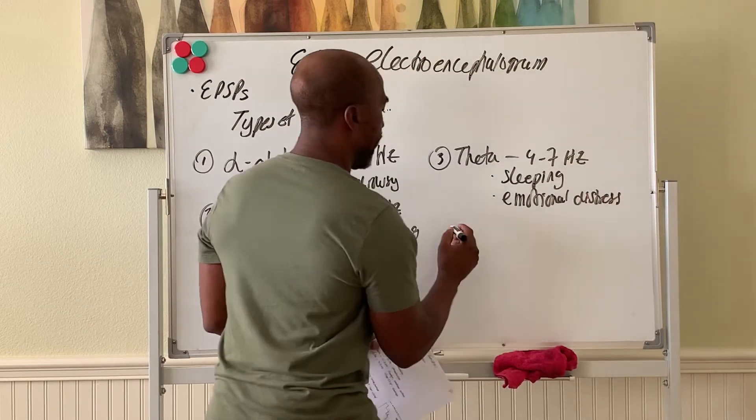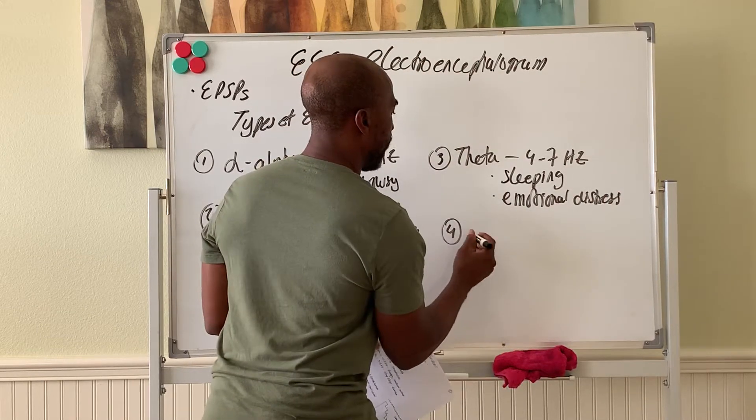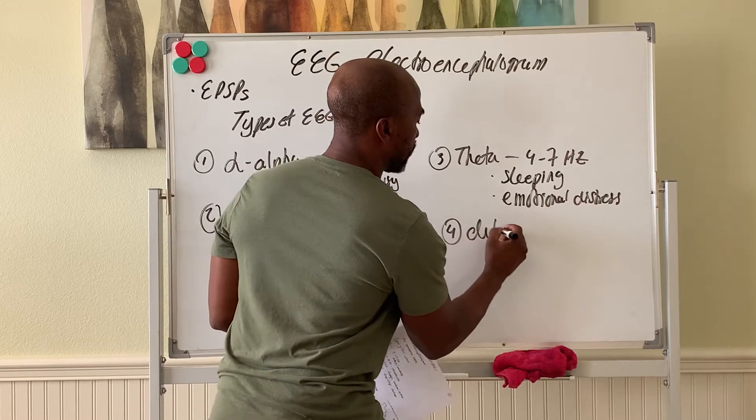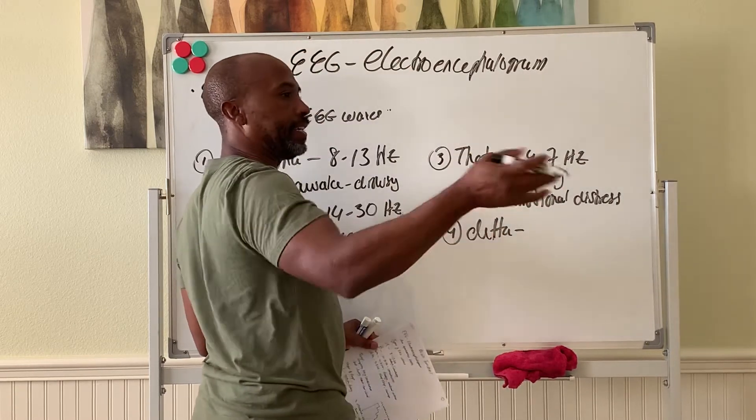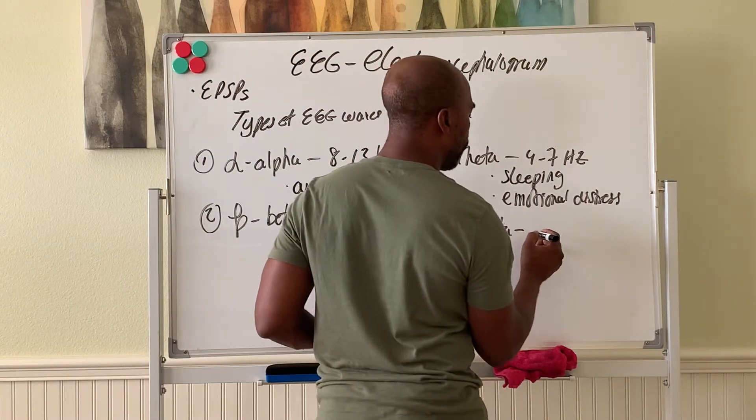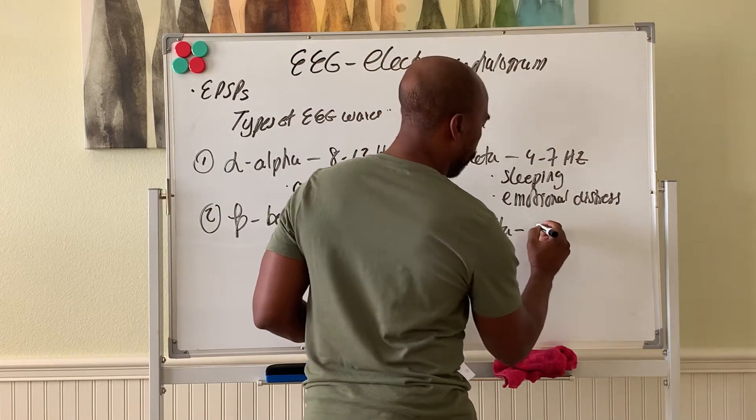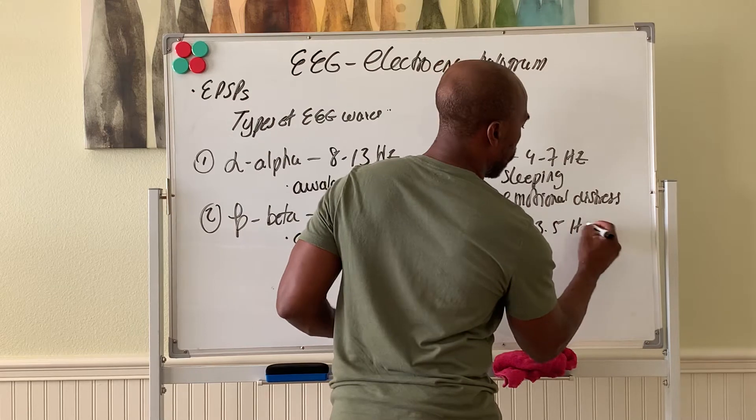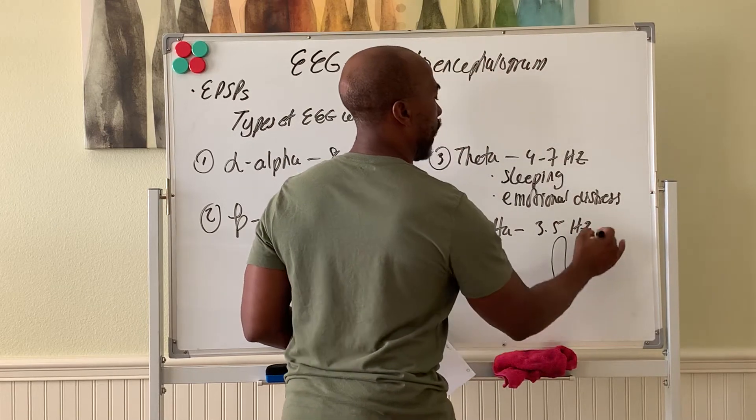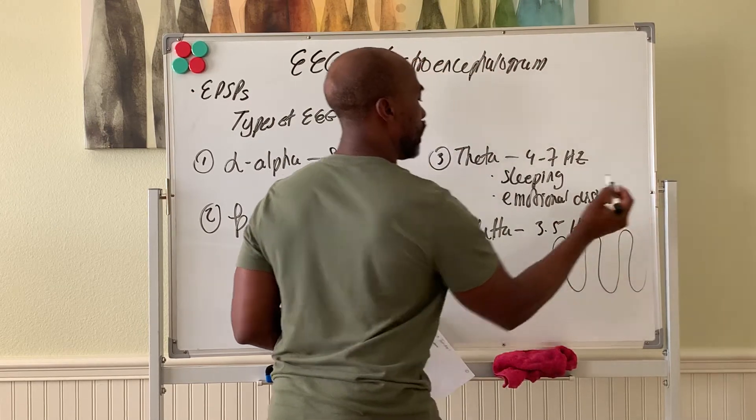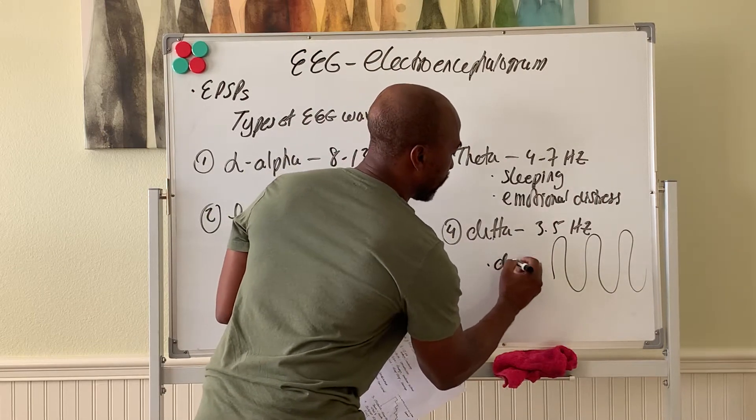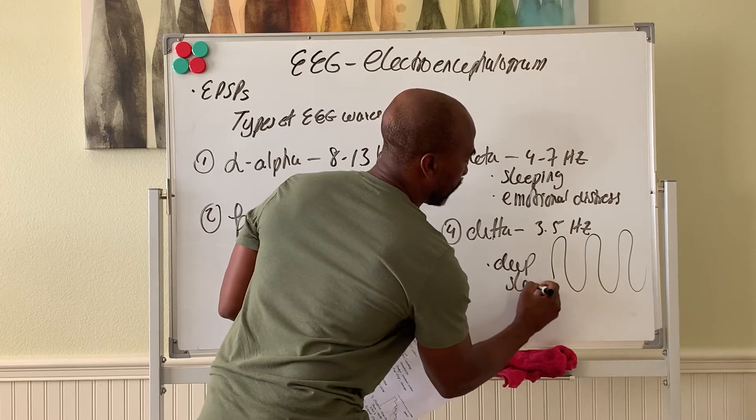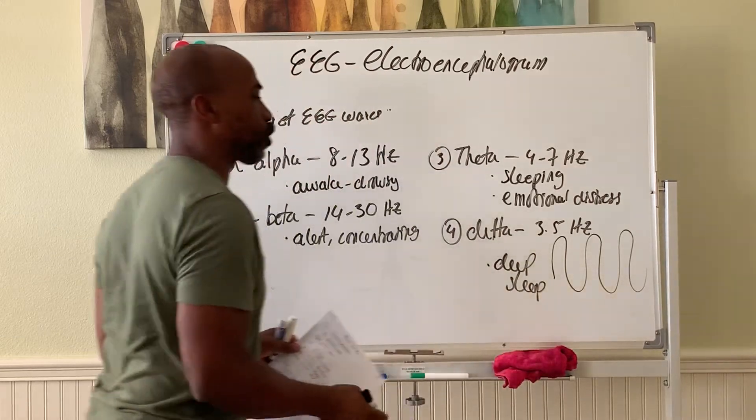Fourth, you have your delta waves. These delta waves are huge waves that have a very slow frequency of about 3.5 hertz. The slow big waves are your delta waves and are normally present during deep sleep, during stage 4 sleep or slow wave sleep.